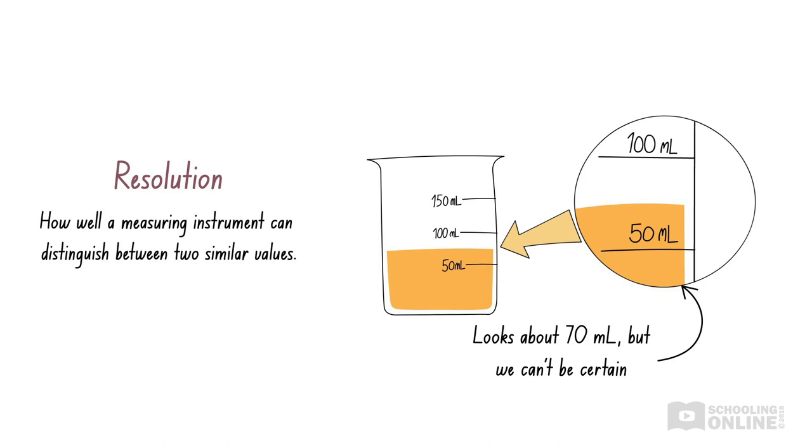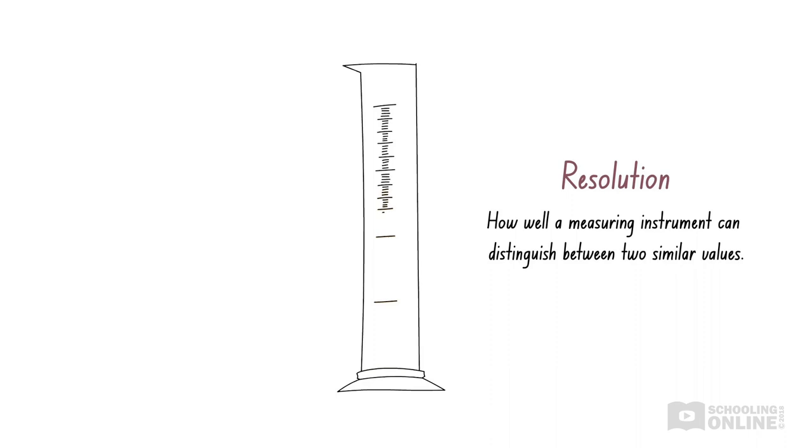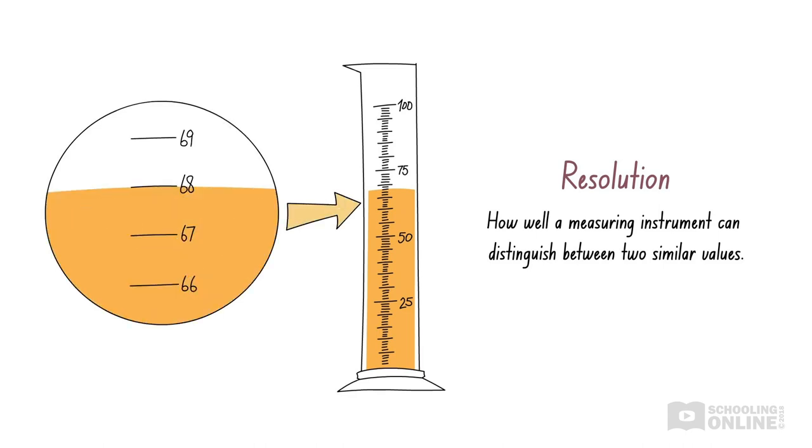There is no way that we can be certain that the volume is exactly 70 millilitres, as opposed to 73 or 67 millilitres. But if we use a measuring cylinder, which has increments of 1 millilitre, we can see that the volume is 68 millilitres. Our measurement is now more accurate, as the measuring cylinder can give us a number that is closer to the true value.